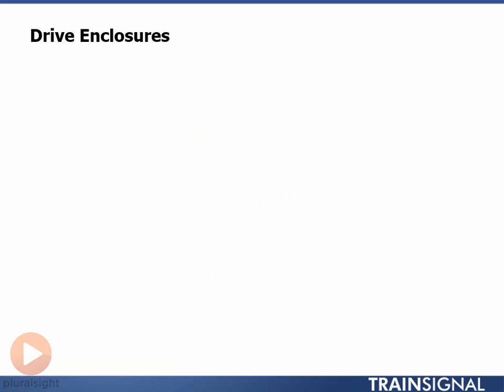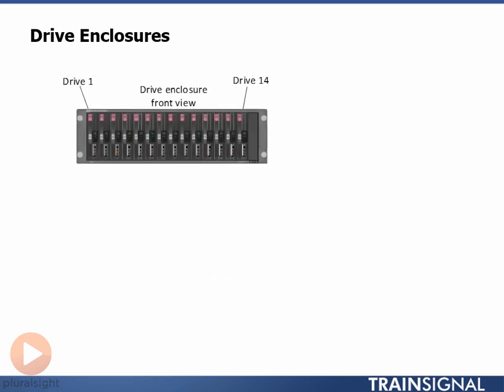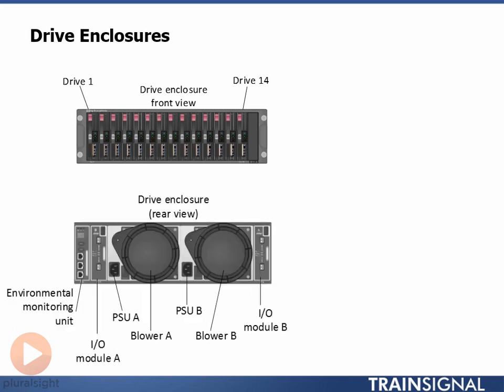It's worthwhile pointing out that just about every component on the back end of a storage array has an address. If it doesn't have an address, it can't be managed or monitored. Look at the diagram of the front of a drive enclosure on the slide. We can see that each drive and drive slot has an address. In our example we've got 14 drive slots, numbered 1 through to 14. But it's not just disk drives and slots that have addresses. If we look at the back view of the same drive enclosure, we can see that there are multiple components there too, and each of these has its own address so that it can be monitored and managed.